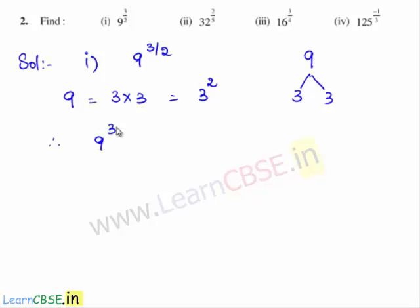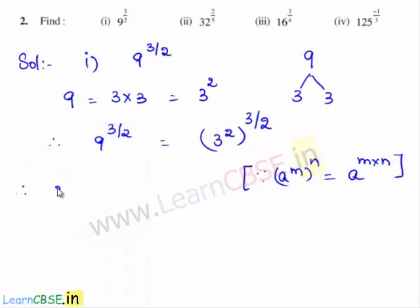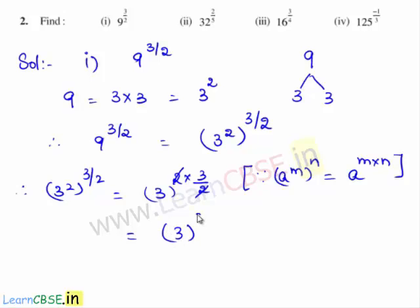Therefore, 9 raised to the power of 3 by 2 can be written as 3 squared, whole power of 3 by 2. As we know, if a power is raised to a power, then we need to multiply the exponents. Since a power m whole power n can be written as a power m times n, we get 3 squared whole power 3 by 2 equals 3 power 2 times 3 by 2. The common factor 2 gets cancelled and we are left with 3 power 3, which is 3 times 3 times 3 — 3 times 3 is 9, and 9 times 3 is 27. Therefore, 9 raised to the power of 3 by 2 is equal to 27.